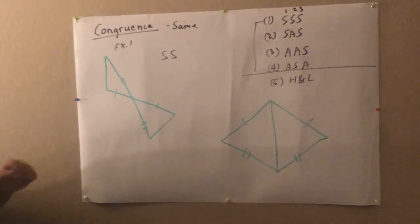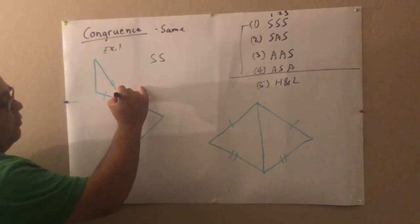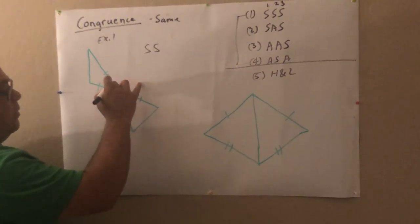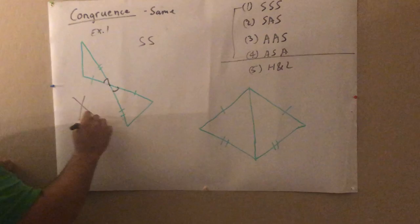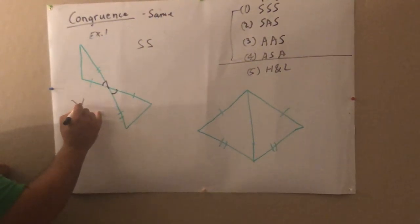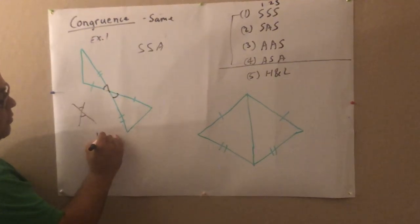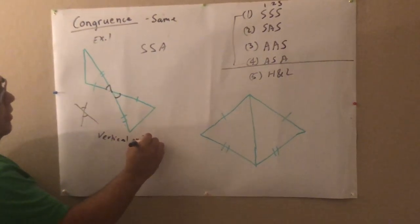And they're not spelling it out for you. What they're expecting you to know is from a previous unit, week one from a previous unit. You have to know that this crisscross action right here, anytime you see this X pattern there, those are called vertical angles. And vertical angles are congruent.